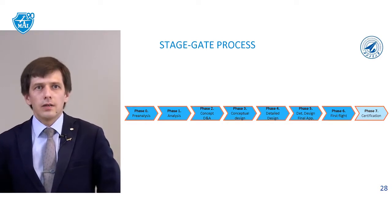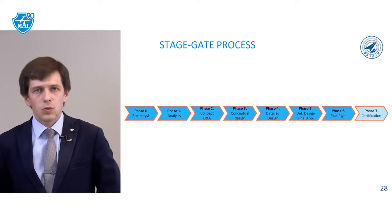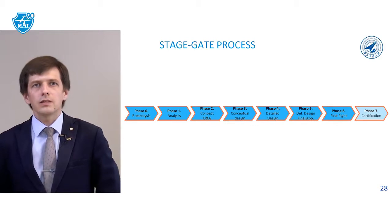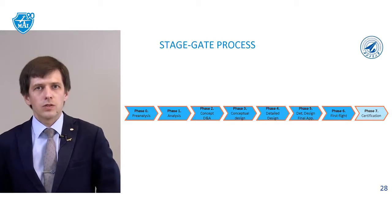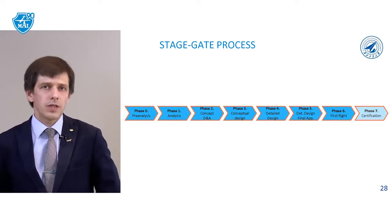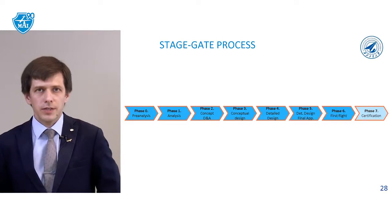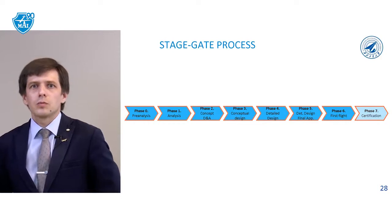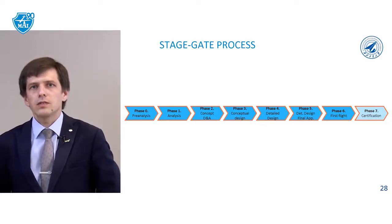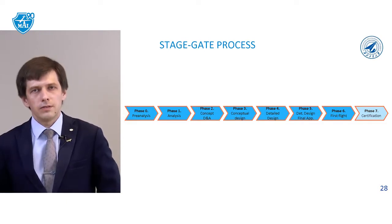Phase 5 is detail design final application – in this step we should freeze all documents, test all the functions of our systems, and move to Phase 6, first flight. When we have checked all functions of our aircraft on test benches and on ground tests, we can start the first flights. The last phase is certification, which must prove that all functions are safe and the airliner can be used as a civil aircraft.